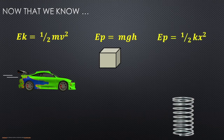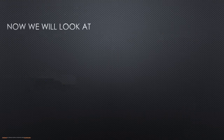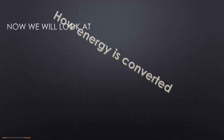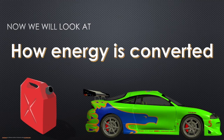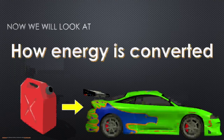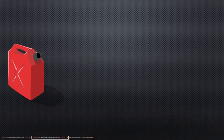Now that we know how to calculate all those individual types, we can look at how energy gets converted between these different types — if we go from one type like chemical and convert it into some other use that we have for that energy. So let's look at that energy conversion in a little bit more detail.